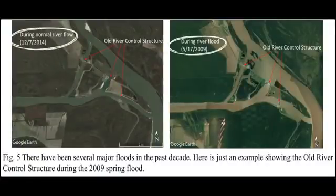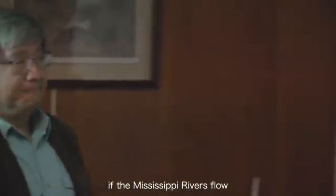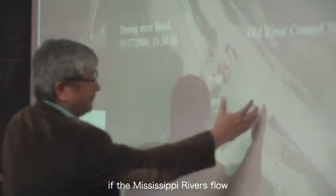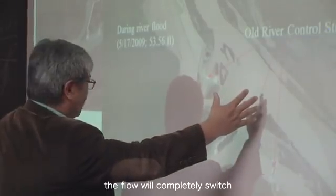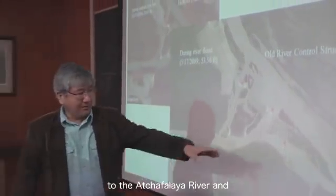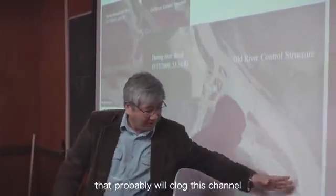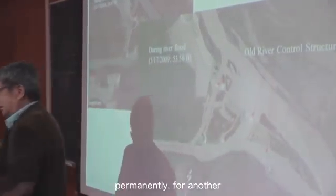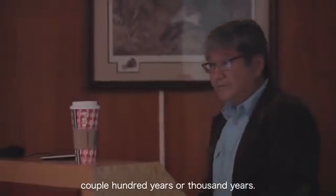Water almost overpowered the Old River Control Structure. If the Mississippi River flow overpowered the structure, the flow would completely switch to the Atchafalaya River, and that would probably clog this channel permanently for another couple of hundred or even a thousand years.